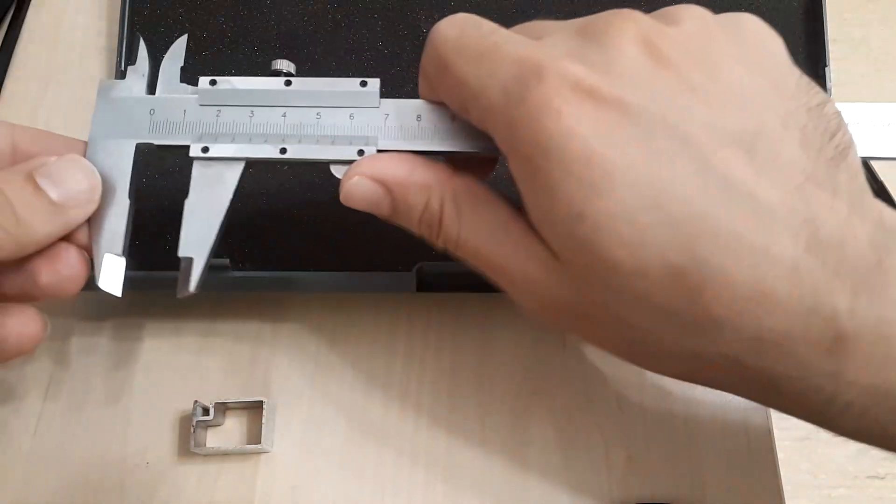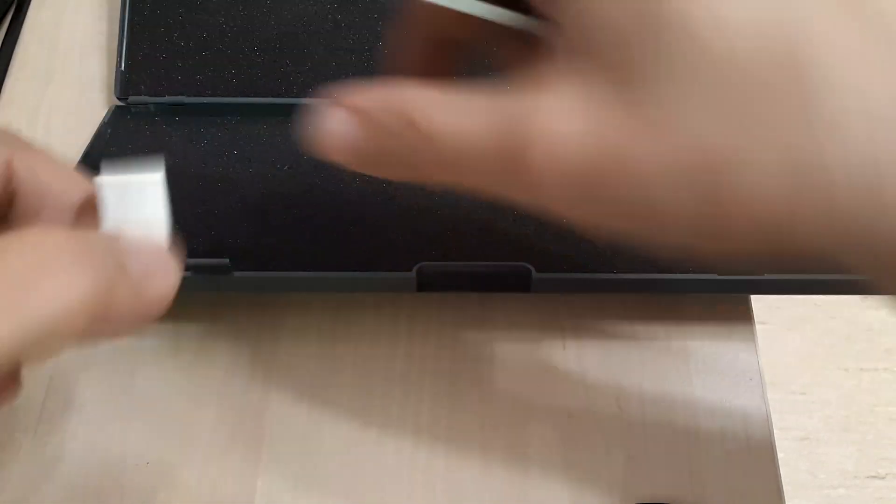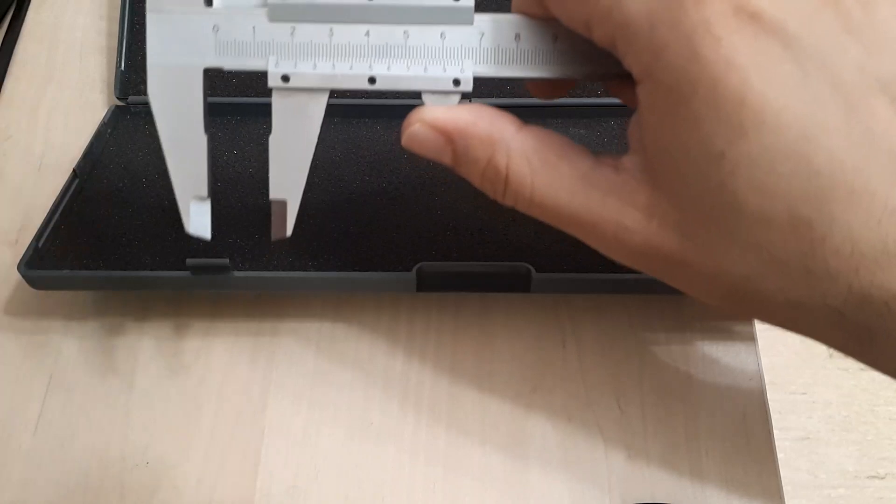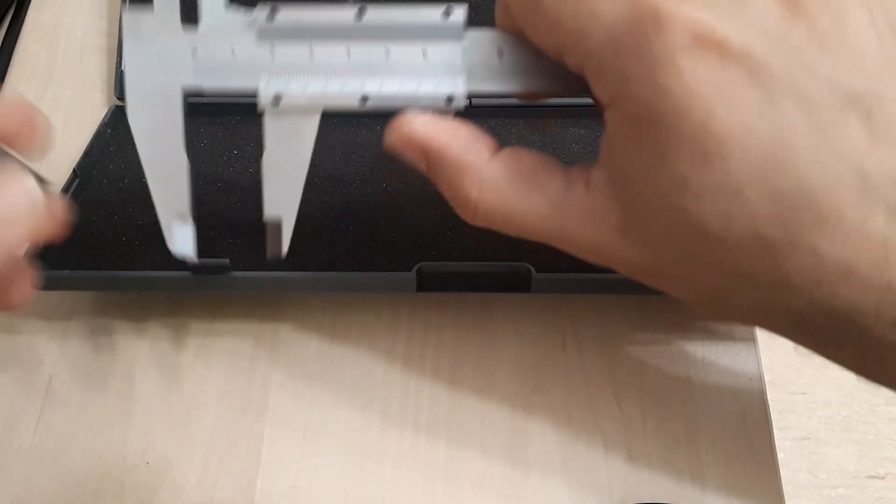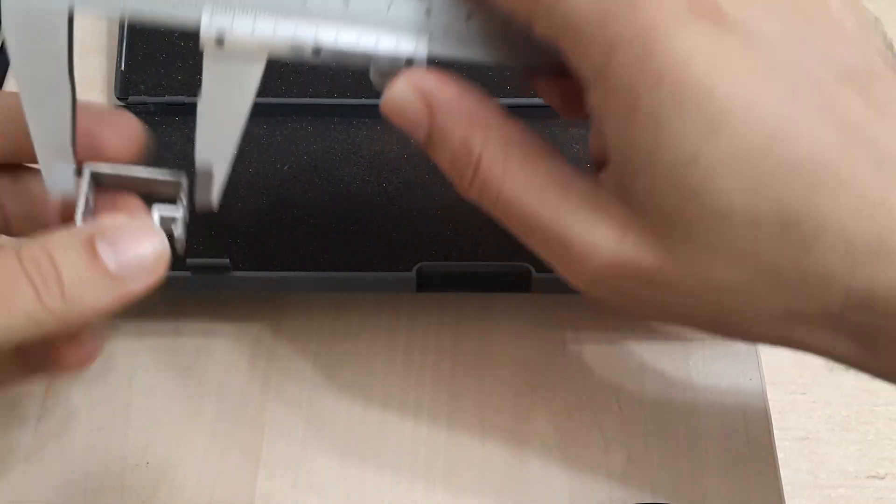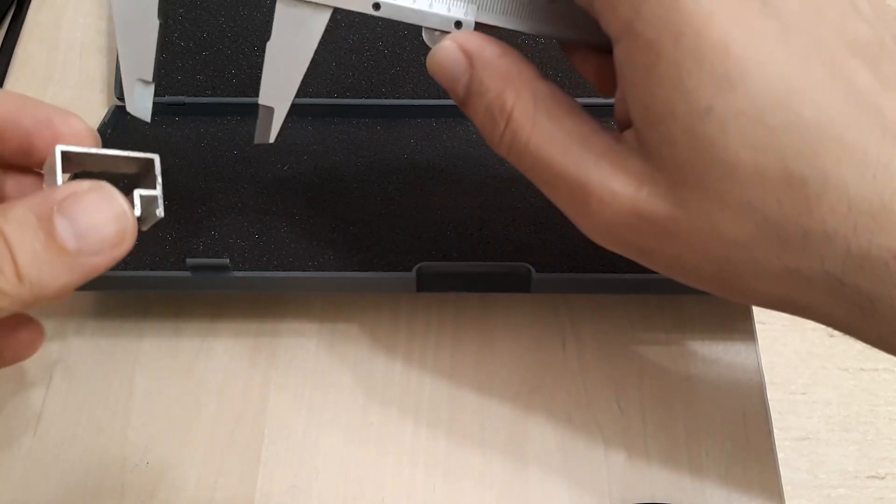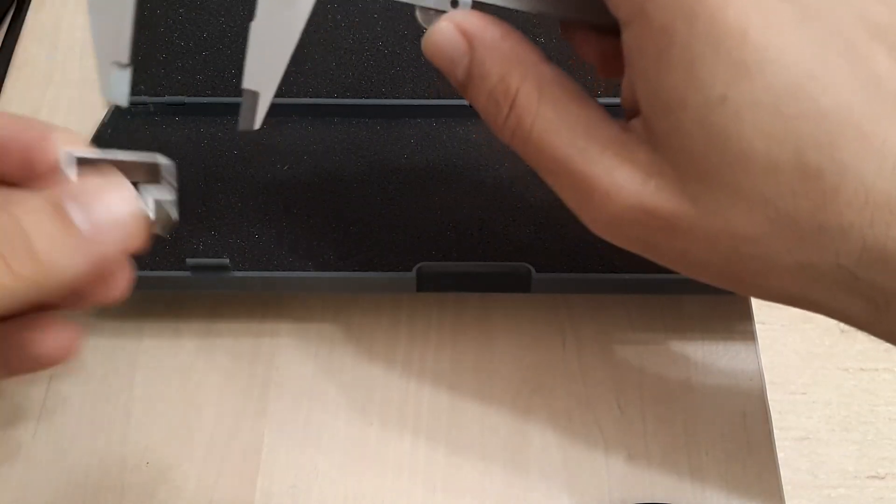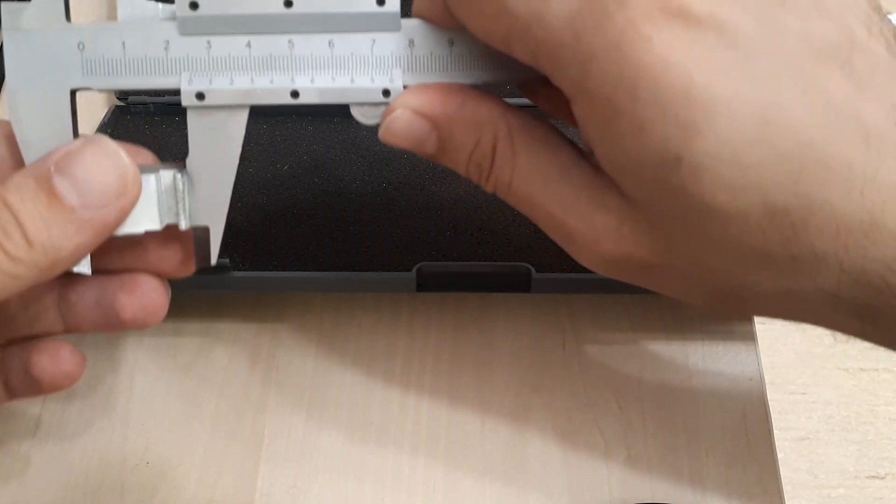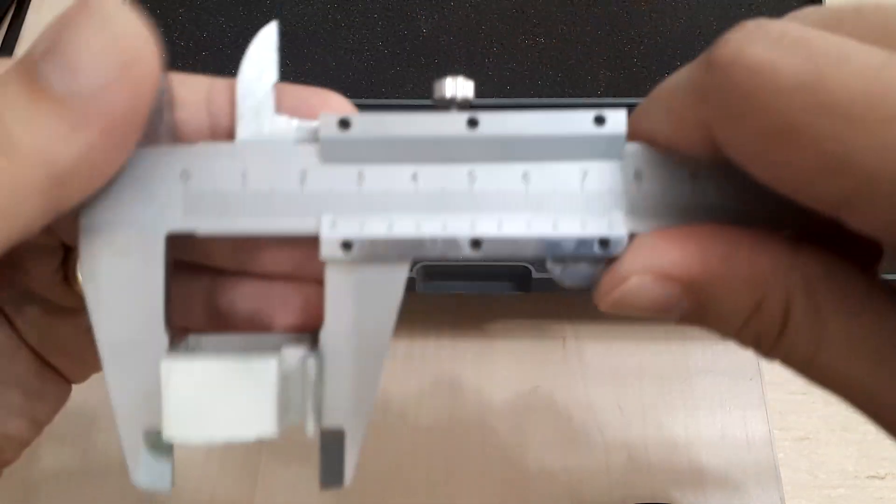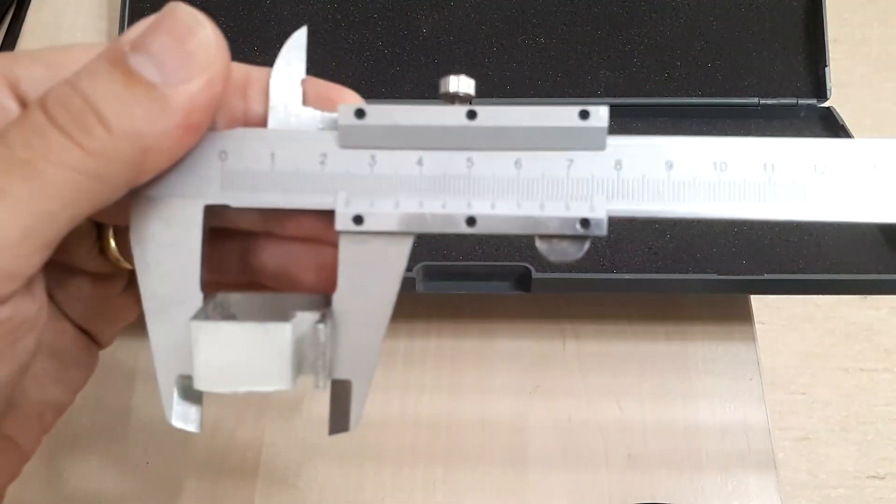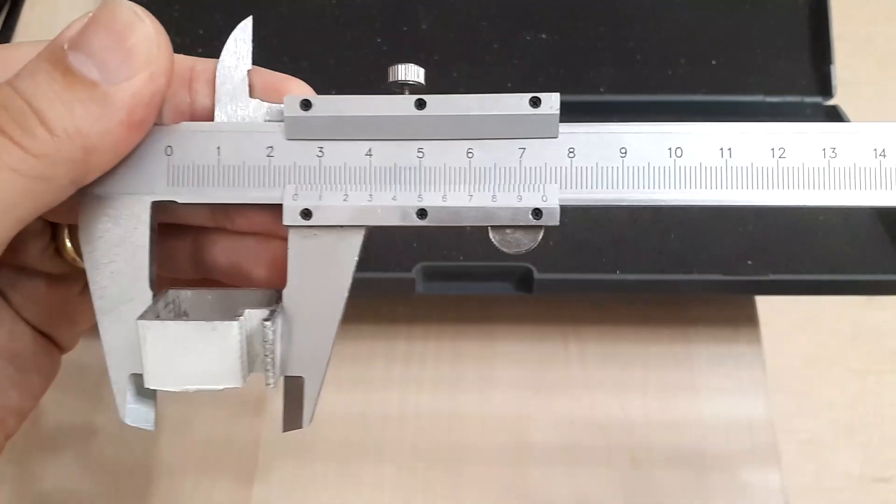So, let's see how you can make such a measurement. Let's say you want to measure the external dimension of this object which is actually an aluminum profile that has been cut to a certain size. So, in order to make the measurement you have to look closely at the scale and notice where some divisions are aligned.